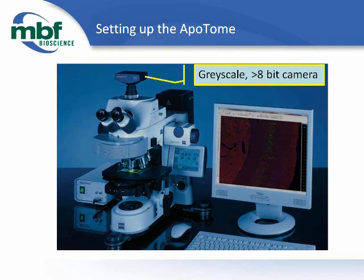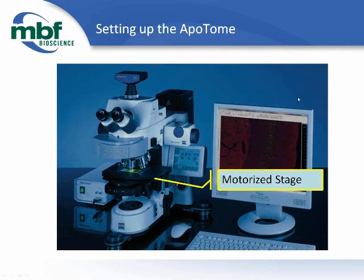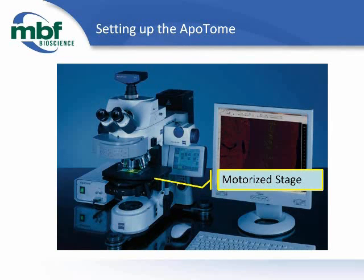A high-bit depth digital camera is required for structured illumination, as the extra dynamic range is particularly important. We will be removing a significant amount of out-of-focus light from the scenes you will be imaging. Additionally, you will need a motorized stage. This allows you to take advantage of the sophisticated software tools available in Stereo Investigator and Neuralucida for navigating and analyzing your tissue samples.